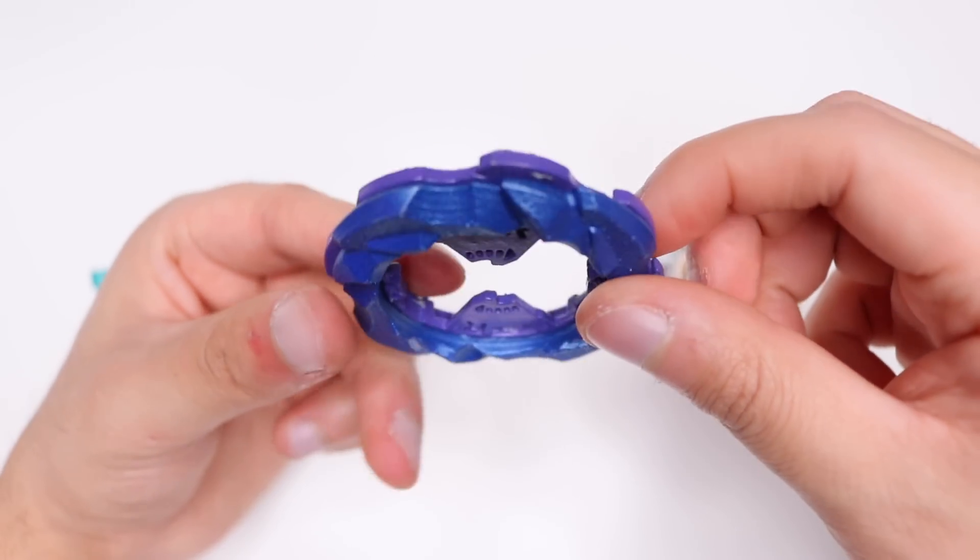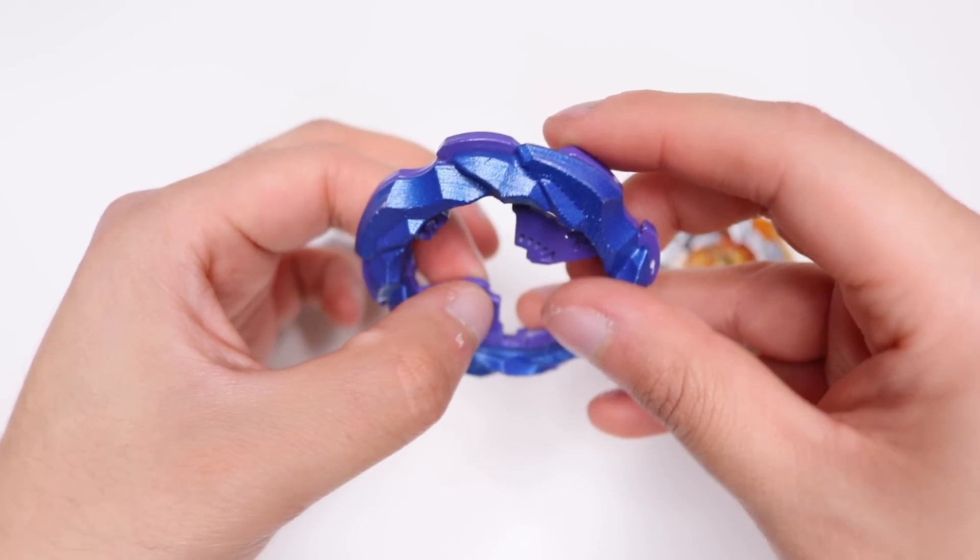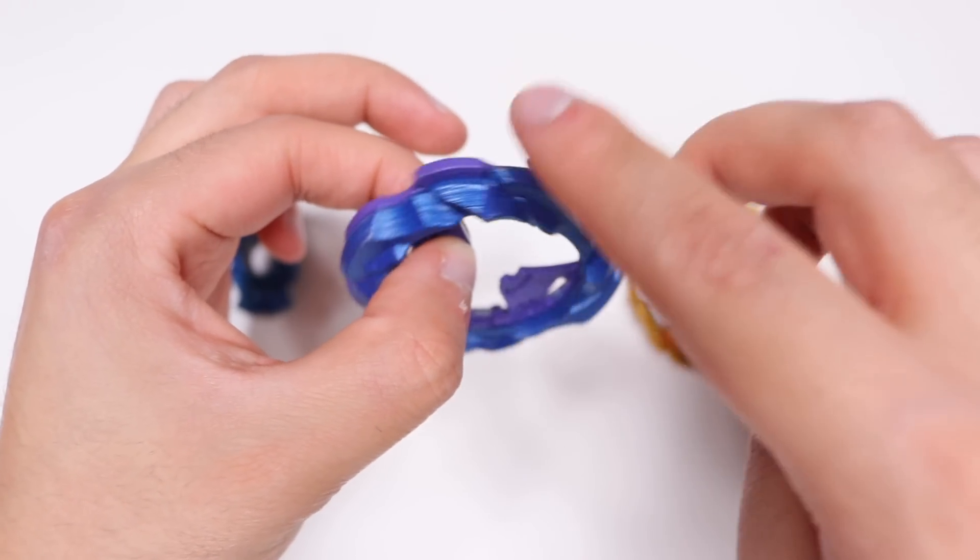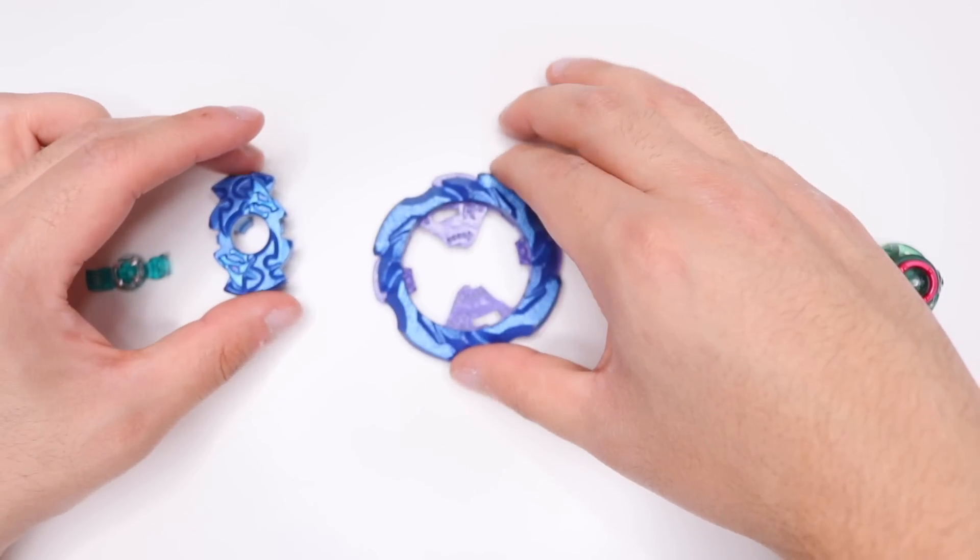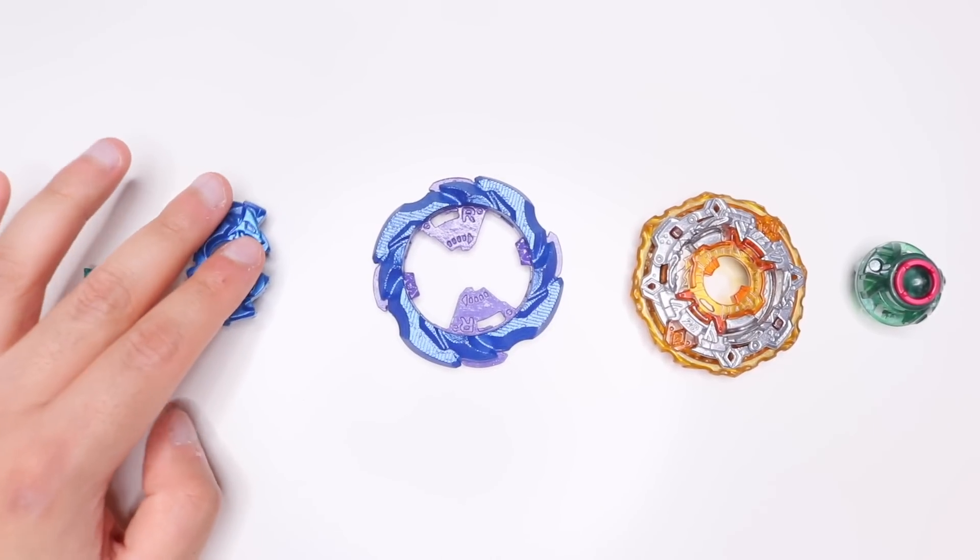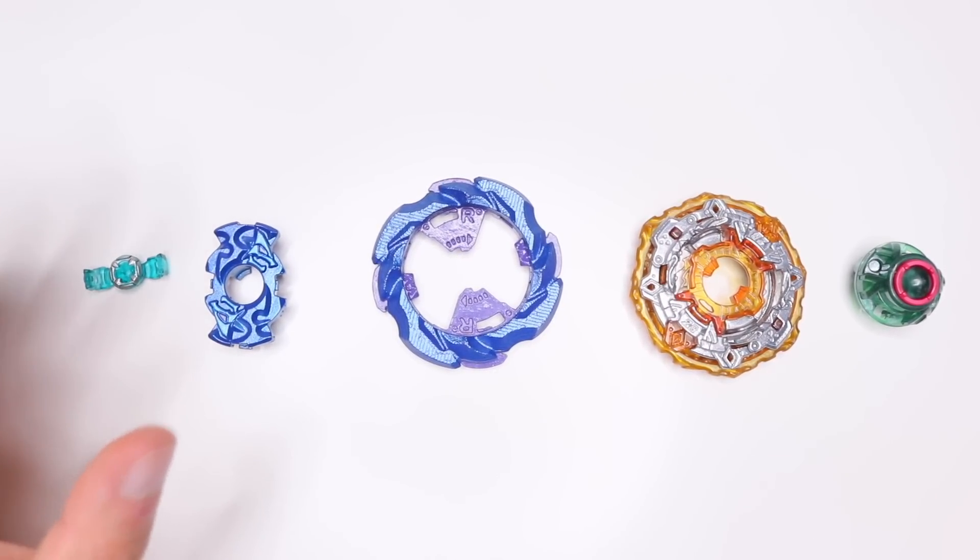I got a really nice finish overall. The bottom does have a rough texture, that's just because of how printing works. The overhangs are always going to come out this way unfortunately, but hey, we're looking at the top and not the bottom.